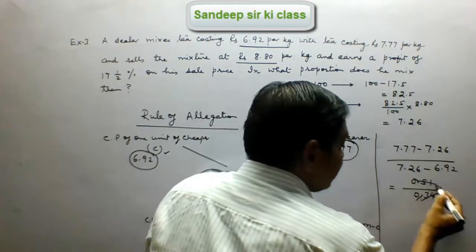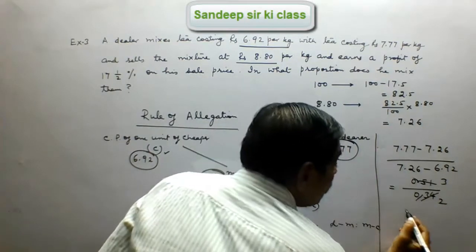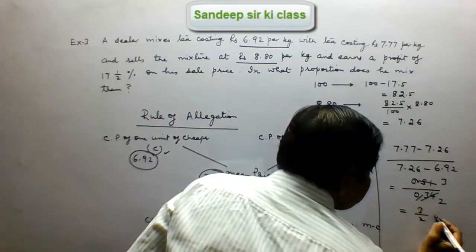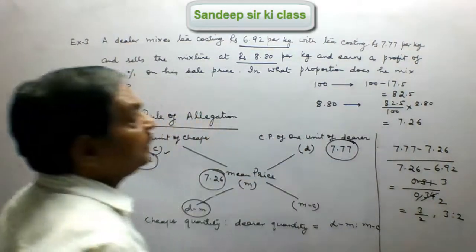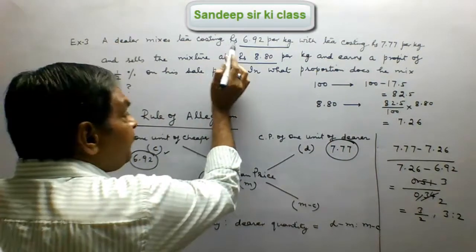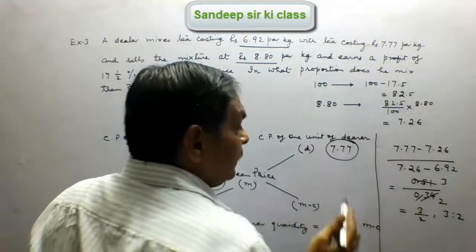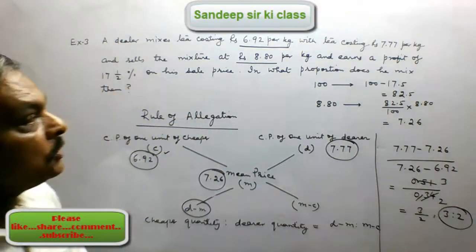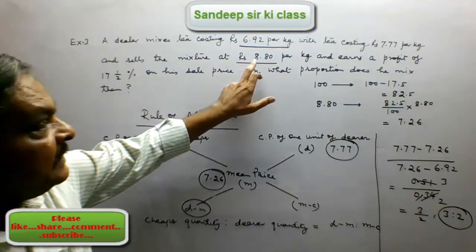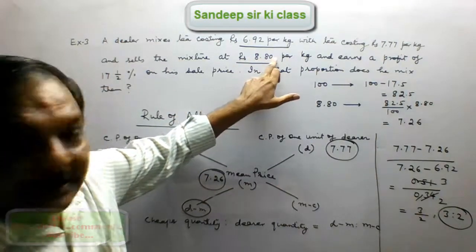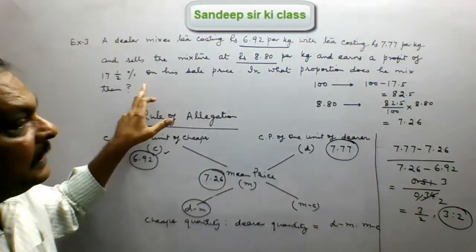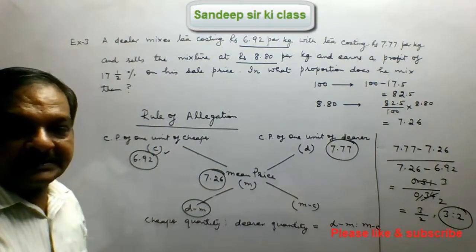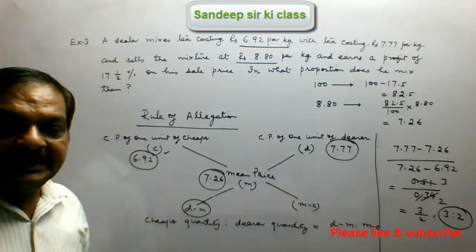So the required ratio is 3 : 2. That is, the cheaper tea and the dearer tea should be mixed in the ratio 3 : 2, so that when the dealer sells it at Rs. 8.80 per kg, he earns a profit of 17.5% on his sale price. Now we will see the next problem.